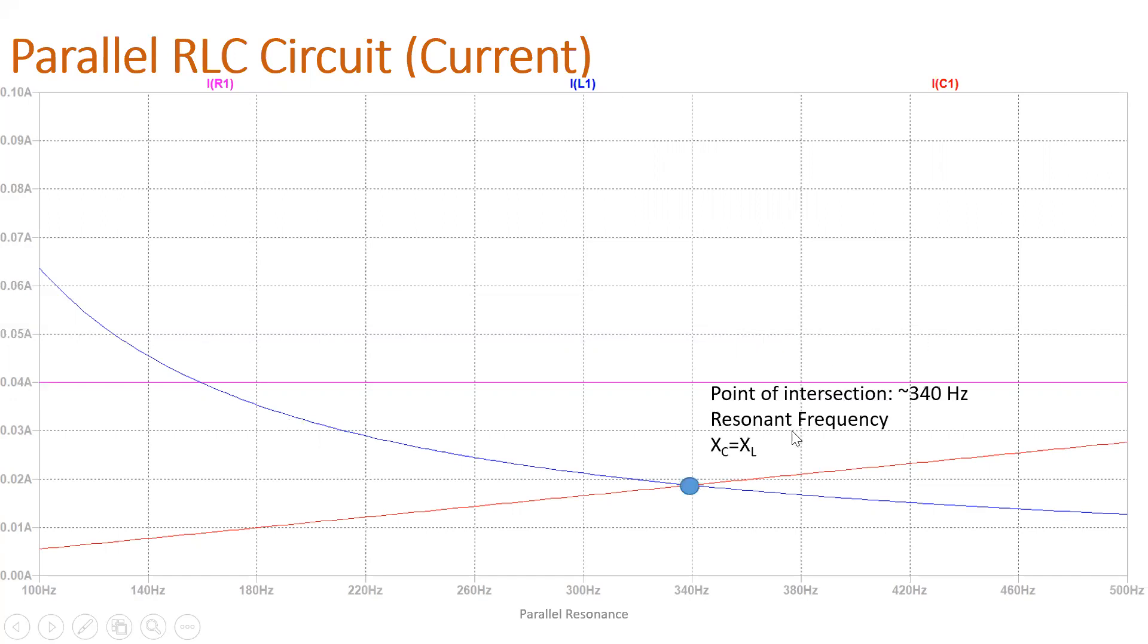And then, we have this point of intersection for the current of the inductor and capacitor. So it's around 340 hertz. So this is where resonance happens, wherein X sub C equal to X sub L, wherein the reactance of the inductor and capacitor becomes equal. So this is your expected waveform. There will be a point wherein the currents of the inductor and capacitor meet. And for the current along the resistor should be a straight line.